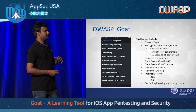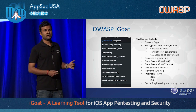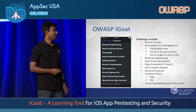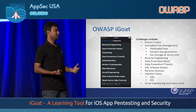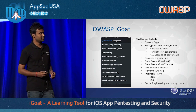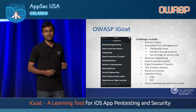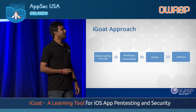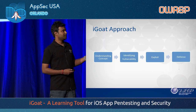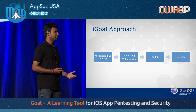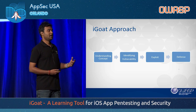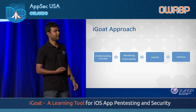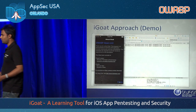We have tons of challenges: broken crypto, key management, reverse engineering, data protection at rest, data protection in transit, injection attacks, cloud misconfiguration attacks, and backend attacks — I'll be demonstrating a few today. The iGOT approach is very simple and straightforward: understand the concept, identify the vulnerability, exploit it, and most importantly learn how to defend and fix that particular attack. Let me show you a video of how it works.